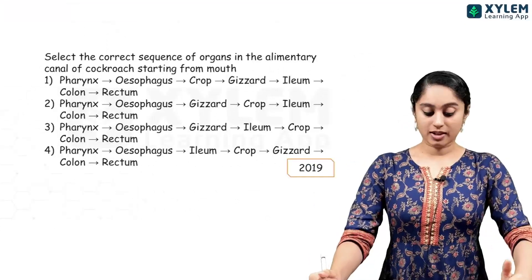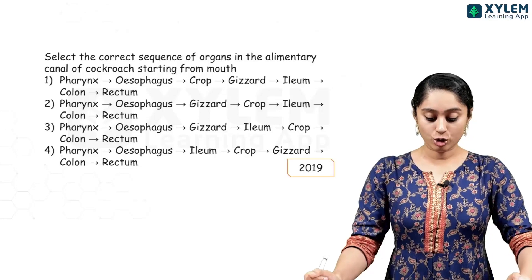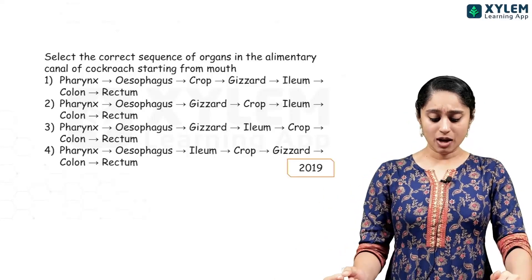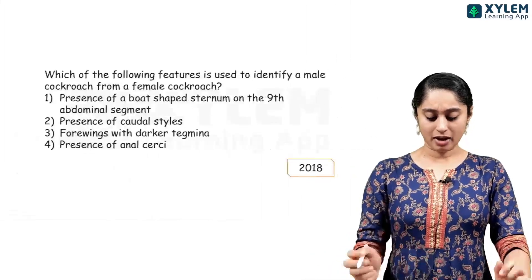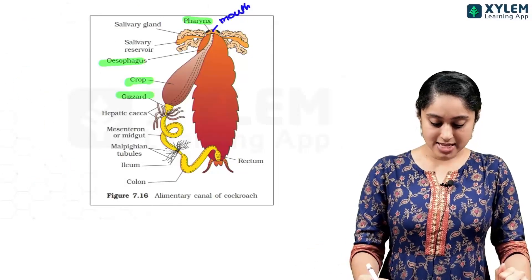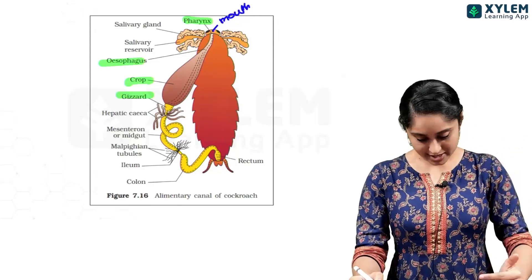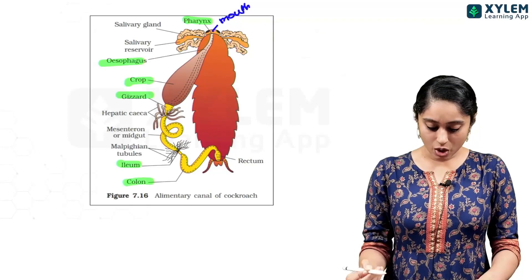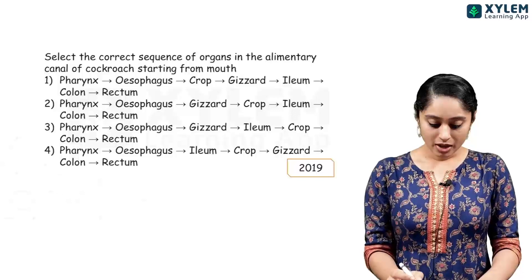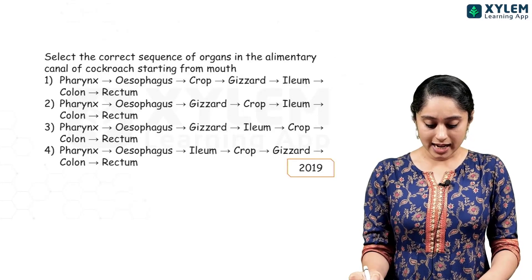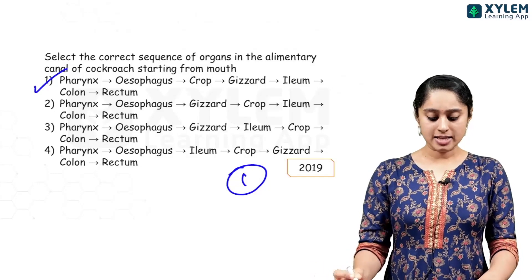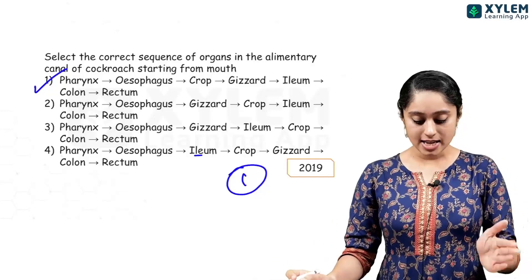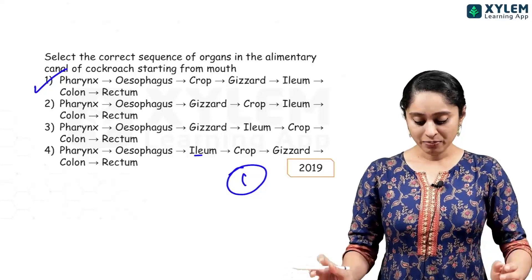A 2019 question: select the correct sequence of organs in the alimentary canal of cockroach starting from the mouth. Going through the diagram: pharynx → esophagus → crop → gizzard → hepatic ceca → midgut → Malpighian tubules → ileum → colon → rectum. Some options have gizzard before crop or ileum misplaced — those are wrong. Option 1 — pharynx, esophagus, crop, gizzard, ileum, colon, rectum — will be the right answer.